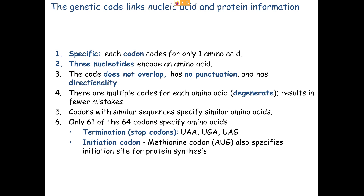Of the 64 possible codons, 61 actually specify amino acids in what we call the universal genetic code. Three of them are termed stop codons: UAA, UAG, and UGA.